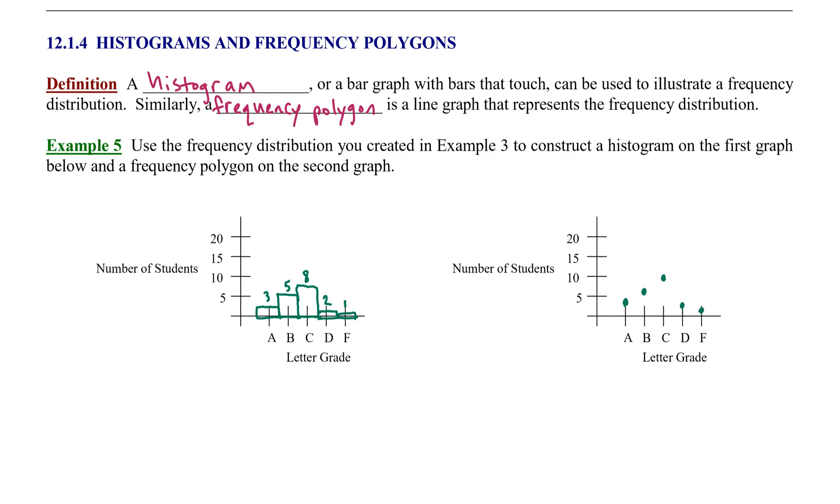To turn this into a frequency polygon, I'm simply going to connect the dots. That's a line graph. To make it a frequency polygon, we drop verticals down to the horizontal axis and complete the polygon. Sometimes you'll see this as a shaded region, and that's what we call a frequency polygon.